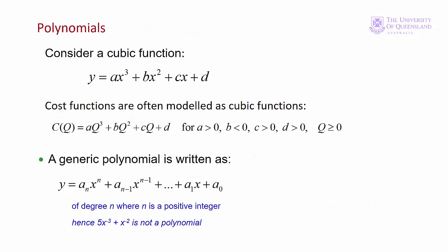While a quadratic function is a second-order polynomial, a third-order polynomial is a cubic function. The general form is y equals ax cubed plus bx squared plus cx plus d. Cubic functions are used extensively in economics because with the right parameter values, they can represent the cost function of a firm. So these are the parameter values here. We'll look at them more closely in module 4.